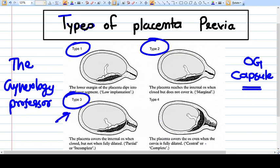Type 4 is when the placenta covers the internal os even when the cervix is fully dilated, or central or complete placenta previa.